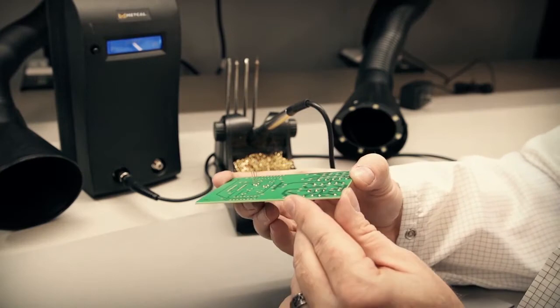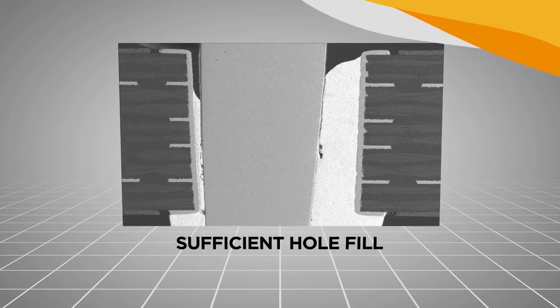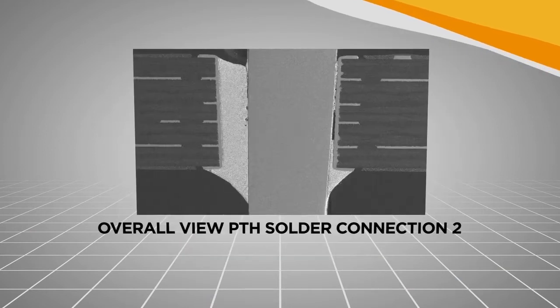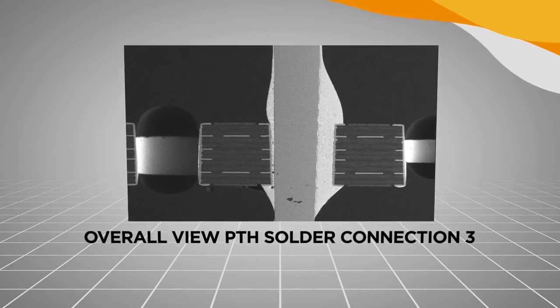While visual inspection provides visual feedback to the user, the ideal way to demonstrate connection validation is through cross-sectional analysis. The following cross-sections demonstrate the IMC formation results.